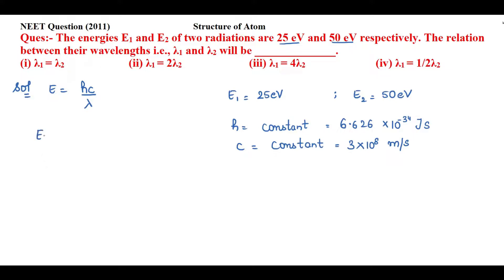For that, E₁ = hc/λ₁ and E₂ = hc/λ₂. Now to find the relation between the wavelengths, I'll simply divide E₁ by E₂.